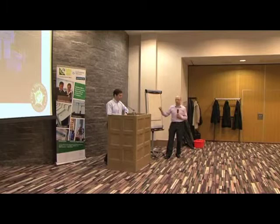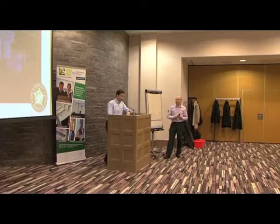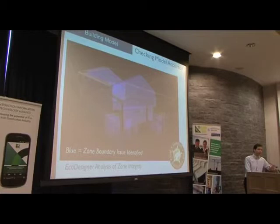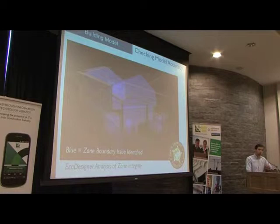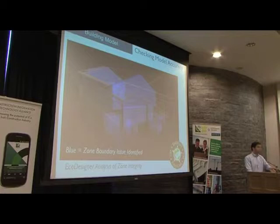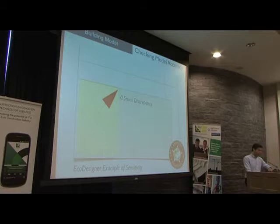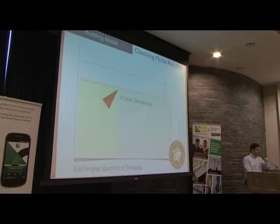We also found that when you draw a model, you need to do it correctly from the start. If you don't model correctly, the energy analysis application — eco-designer or any other — will not recognise zone boundaries correctly. Here you can see a screenshot showing blue faces which are unfaced areas — this is a problem, as it will not recognise that there's a wall behind or beside it. One of the slabs was drawn half a millimetre off, and that threw off the complete energy analysis software. This showed us that model accuracy is very, very important right from the very beginning. Once it's properly set up, you can continue and build on a sustainable ground.